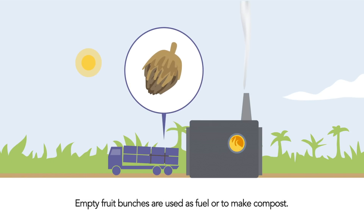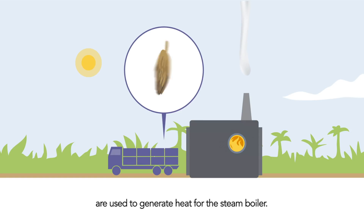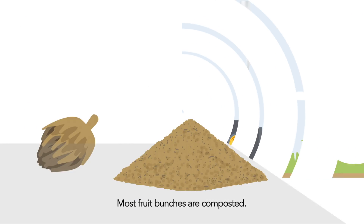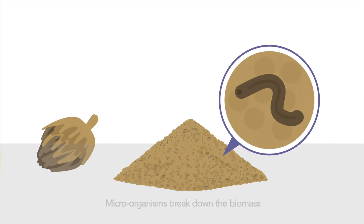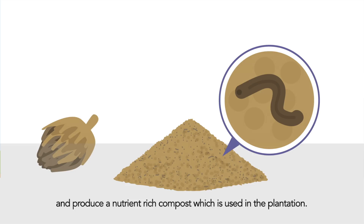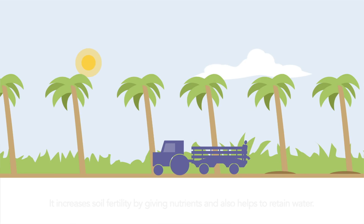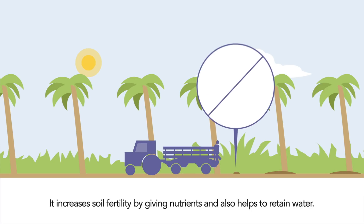Empty fruit bunches are used as fuel or to make compost. They are dried when used to generate heat for the steam boiler, while most fruit bunches are composted. Microorganisms break down the biomass and produce a nutrient-rich compost used in the plantation, increasing soil fertility and helping to retain water.